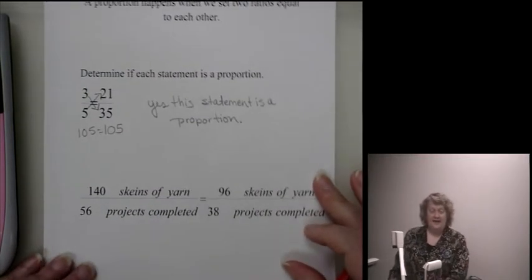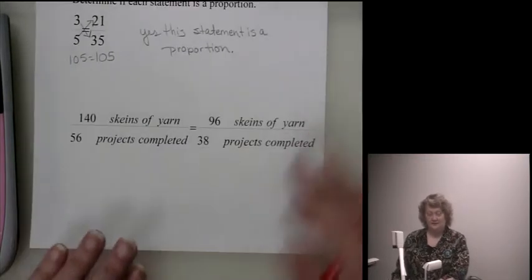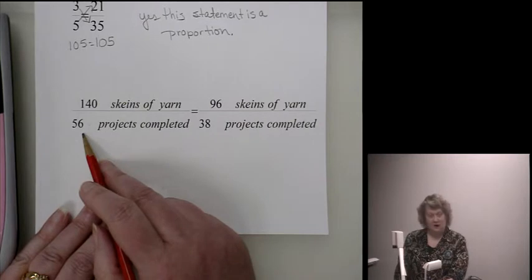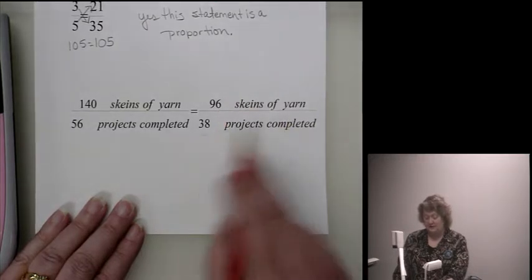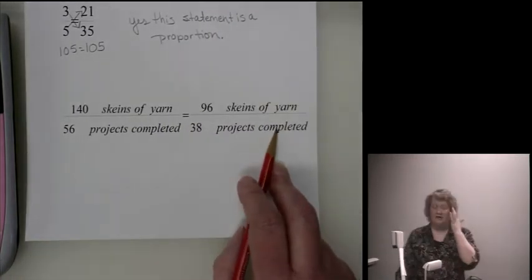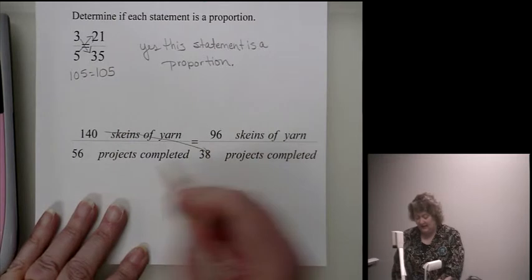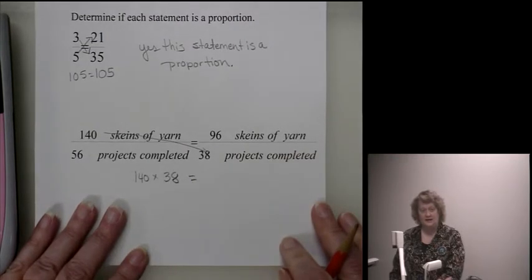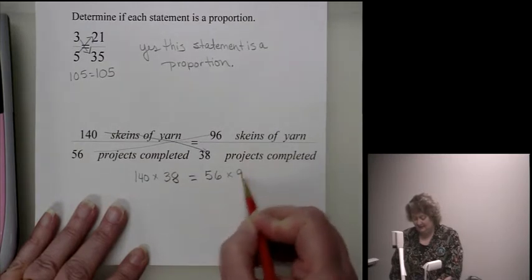Now that statement as a proportion was strictly ratio numbers without any values. Sometimes we'll be given those ratios with values. 140 skeins of yarn to make 56 projects completed, and is that equivalent or equal to 96 skeins of yarn to complete 38 projects completed? We want to know if this is a proportion. And again, we're going to use that cross product. We're going to multiply 140 times 38, and since we have a lot of words here, I'm going to rewrite those numbers down below it, and 56 times 96.